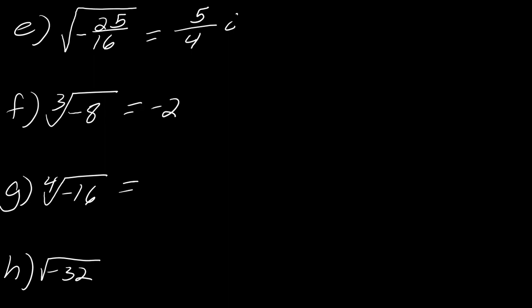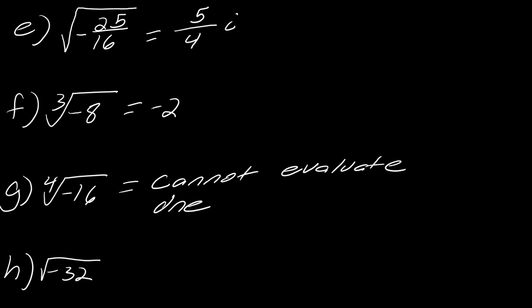i only has to do with square roots. So right now, if we cannot evaluate, we just think of it as it does not exist. Now for h: I can break this down — the square root of negative 32 is the square root of negative 16 times 2, so this becomes 4i times the square root of 2. Be careful — don't think that now you've got i you just use it everywhere. You have to still think through the details logically, and this only works for square roots.